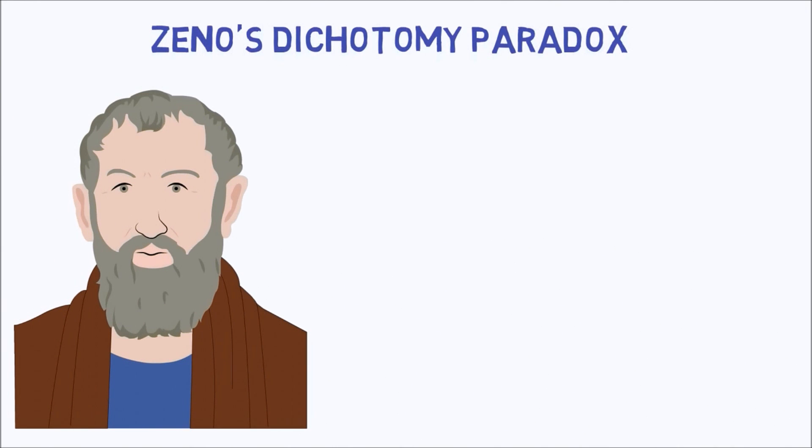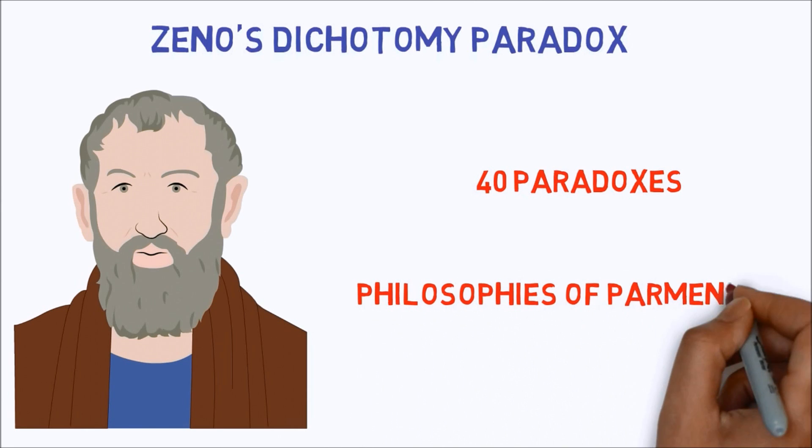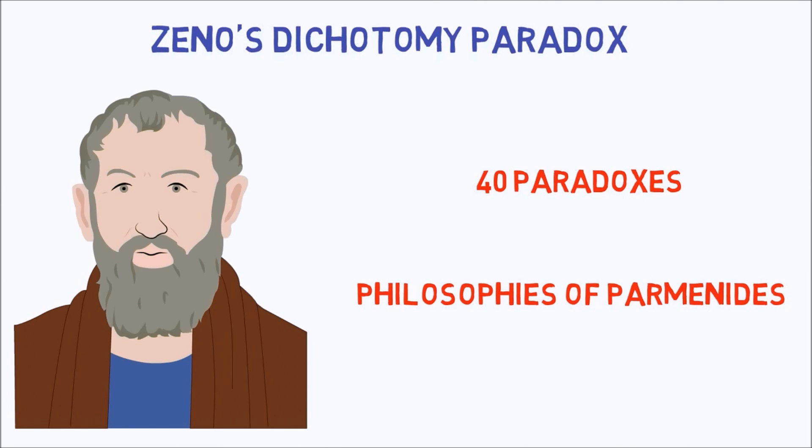The paradoxes of the philosopher Zeno have puzzled mathematicians, scientists, and philosophers for millennia. Over 40 paradoxes are attributed to him, which appeared in a book he wrote as a defense of the philosophies of his teacher, Parmenides. The most famous of Zeno's arguments is Achilles and tortoise race paradox.